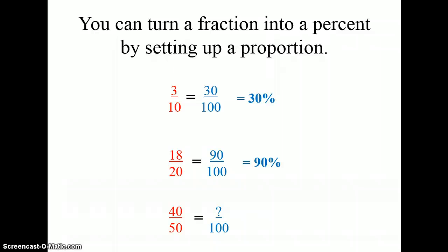In the last problem, 40-fiftieths, I need to ask myself, what do I need to multiply 50 by to get 100? And, the answer is 2. Since I multiply 50 by 2 to get 100, I must also multiply 40 by 2, which gives me 80. And, 80 over 100 is 80 percent.